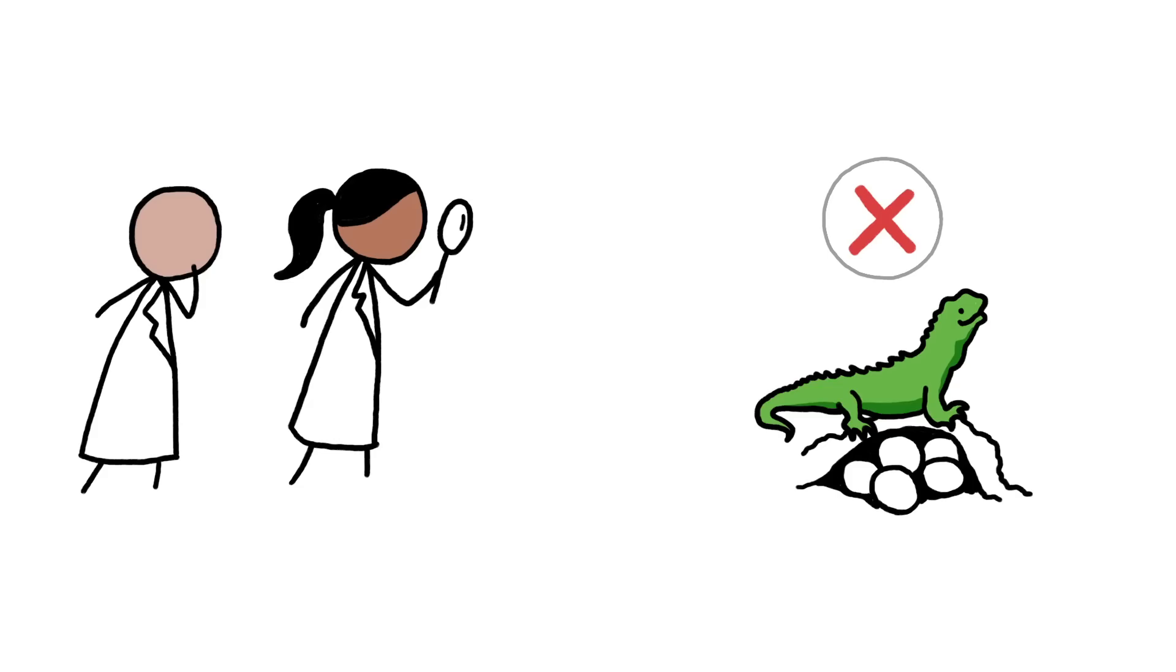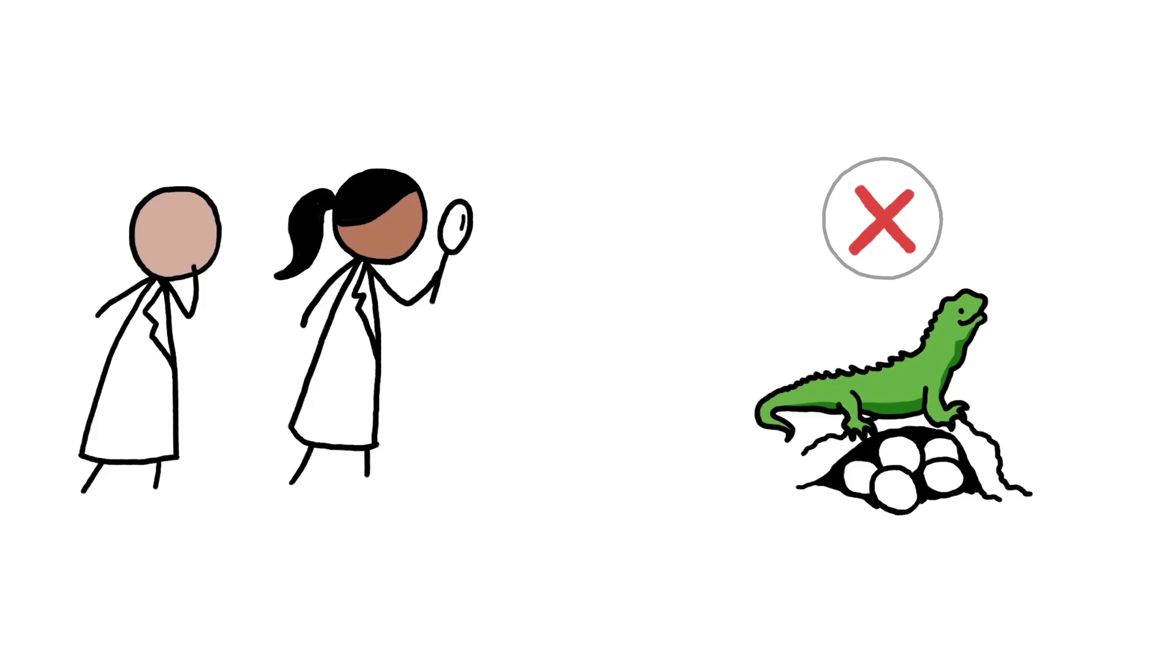For a long time, though, the ancient reptiles known as tuataras remained a mystery. They also don't have penises, but since they're highly protected, no one is allowed to collect their eggs for research, and scientists couldn't check their embryos for penis nubs.